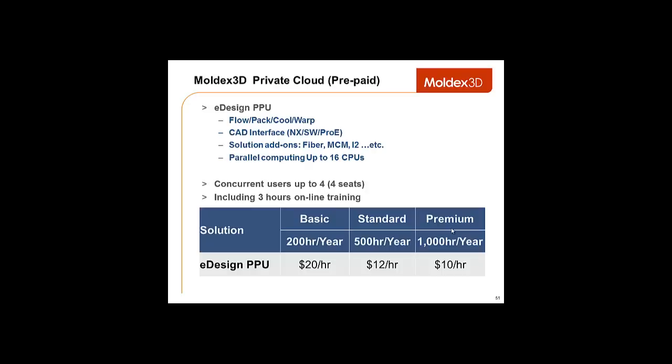This brings us to our review of what the private cloud offers. The private cloud will provide users with flow, pack, cool, warp analyses, CAD interface with NX, SolidWorks, ProE, etc. Solution add-ons like fiber orientation, multi-component molding, i2, venting analysis, etc. And parallel computing for up to 16 CPUs. We also offer up to 4 seats for any users who purchased one of the packs below. You can see we have a basic, a standard, and a premium.